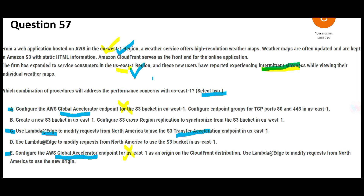Transfer Acceleration is useful when a client uploads content — for example, if users of a photo-sharing platform upload photos centrally and they get dispersed to different regions. But in this scenario, it is a cross-regional access problem. So option C is wrong.